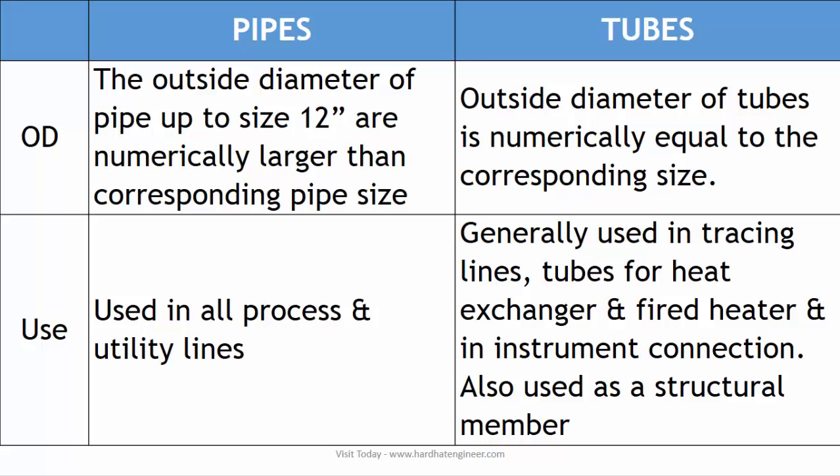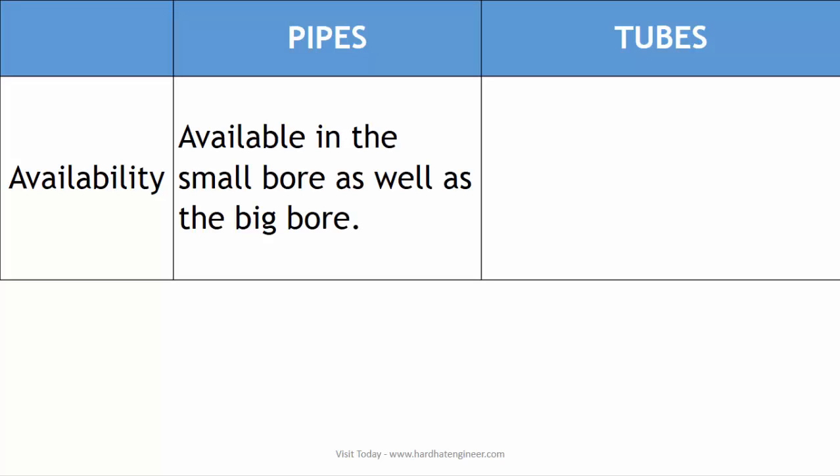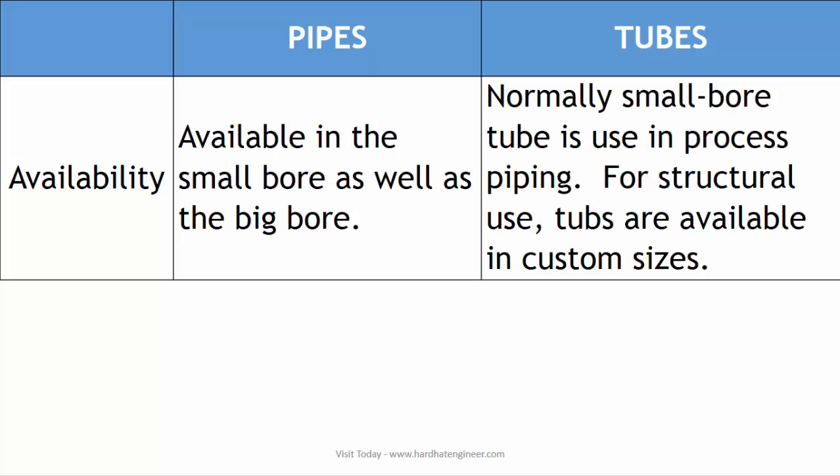Pipes are available in standard sizes of 1/8 inch to 18 inches, whereas tubes used in oil and gas are generally of small size. Structural tubulars are available in all desired sizes.